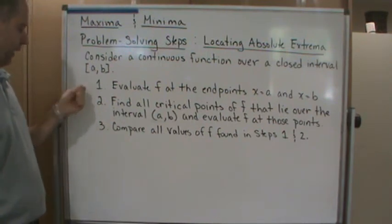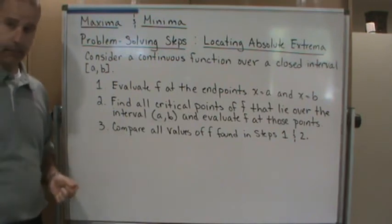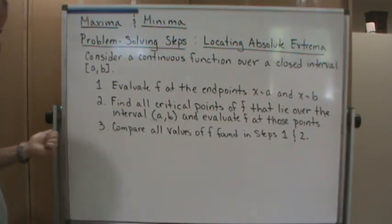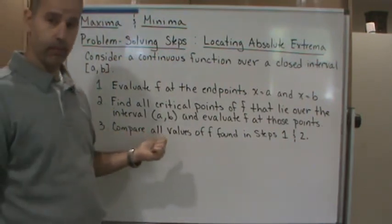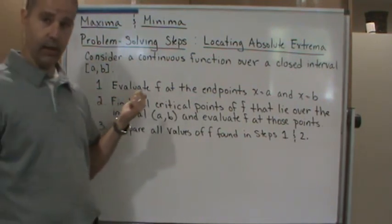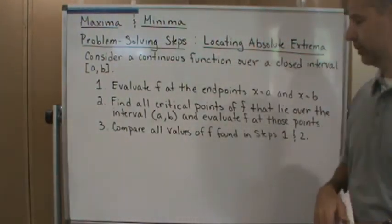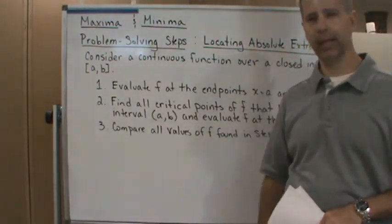Okay, then in step three, you're going to take all of the values you found in steps one and two and you're going to compare them. Of course, the largest value of those values, the largest one is going to be the maximum, the absolute maximum, and the smallest value is going to be the absolute minimum. And that's it.